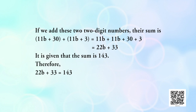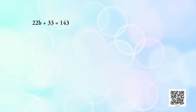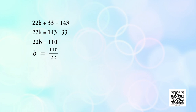It is also given that the sum of the two numbers is 143. So (11b + 30) + (11b + 3) = 22b + 33 = 143. We have a linear equation in one variable b. Solving: 22b = 143 − 33 = 110, so b = 110 ÷ 22. Therefore b = 5.